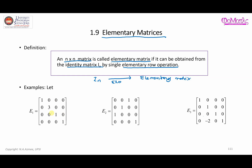Here are some examples. This first one is a 4×4 matrix, so the associated identity matrix is the 4×4 identity. You can see the first, third, and fourth rows are the same as the identity, but there is a slight change in the second row. That change is obtained by multiplying 3 with the second row of the identity matrix — so just one single operation.